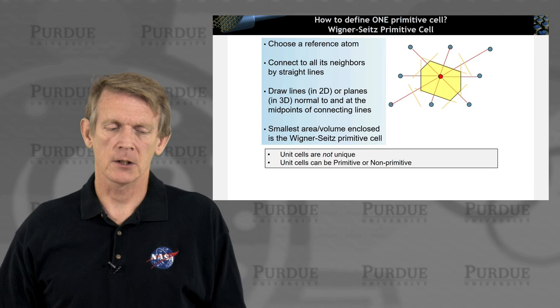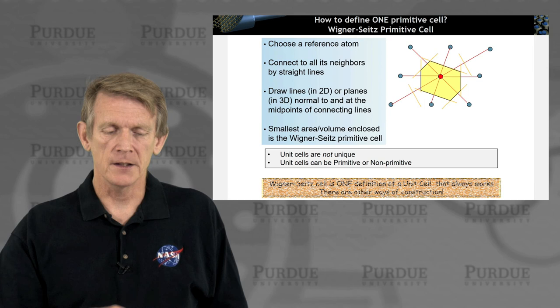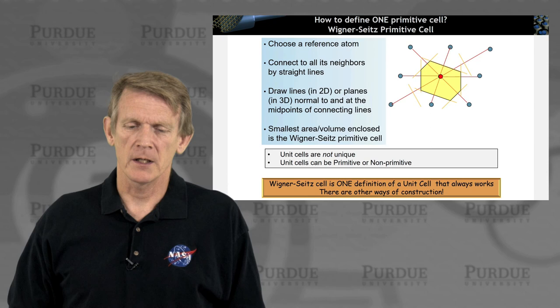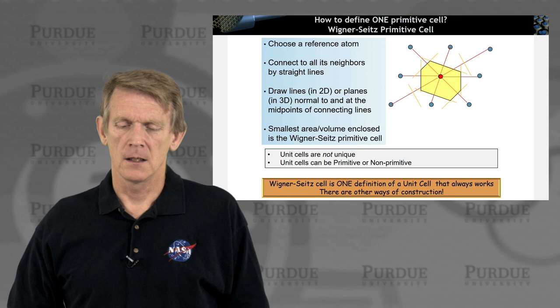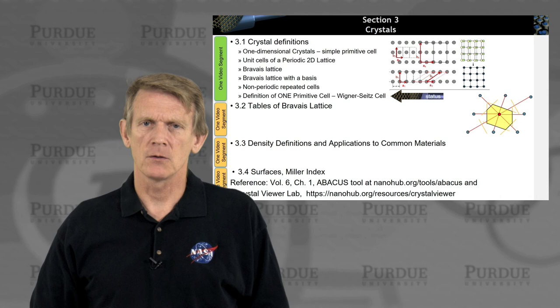So the smallest area or volume enclosed is the so-called Wigner-Seitz primitive cell. And there are other ways to construct a primitive cell. The Wigner-Seitz way is a commonly accepted one, and it's very easy to follow. And this recipe always works.